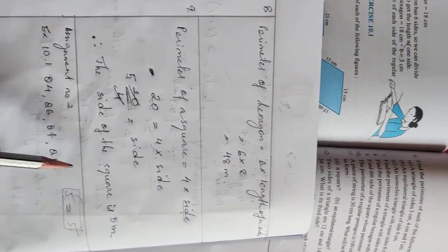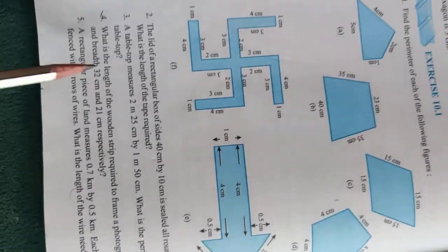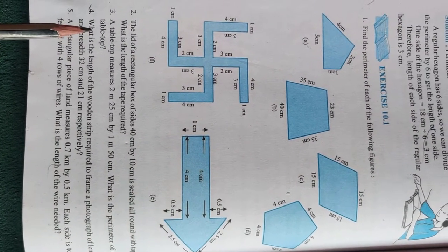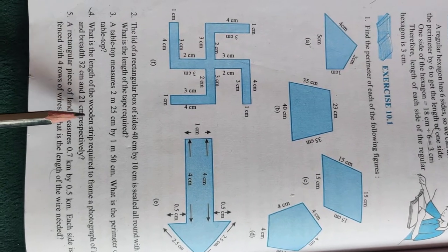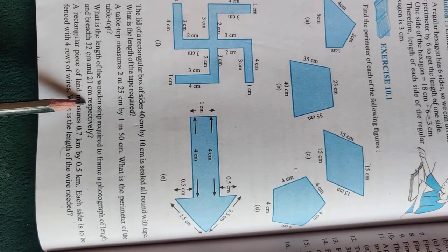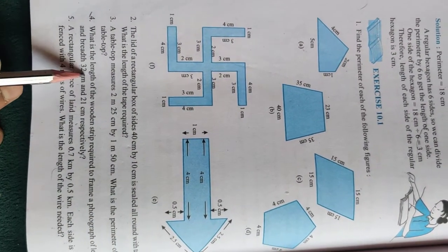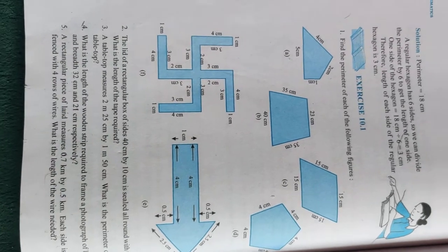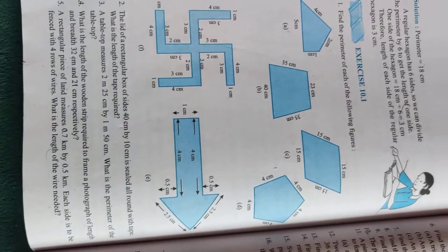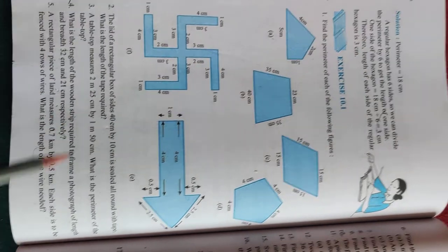That's enough for today. Your assignment is exercise 10.1 question number four. The question is: what is the length of the wooden strip required to frame a photograph of length 32 centimeters and breadth 21 centimeters? According to the equation, length equals 32 and breadth equals 21. Use the perimeter of rectangle formula: 2 times (L + B). It's very easy.